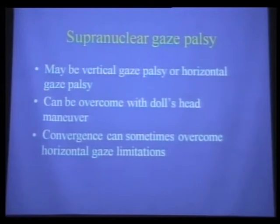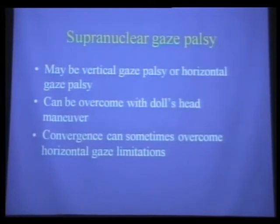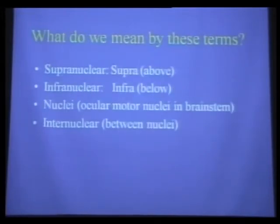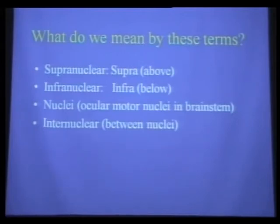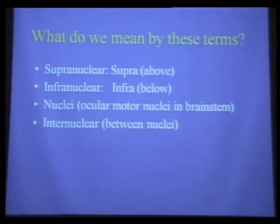The same thing applies for convergence. If we can get someone to look at a near target and the eyes can cross in, then you know that whatever is keeping the eyes from moving inward can be overcome with a near stimulus—in this case, convergence. So what we mean by supranuclear, infranuclear, and internuclear is simply: what is the relationship of the damaged anatomic pathway relative to the nucleus? Above is supranuclear, below is infranuclear—which includes the nerve, the muscle, and the junction.